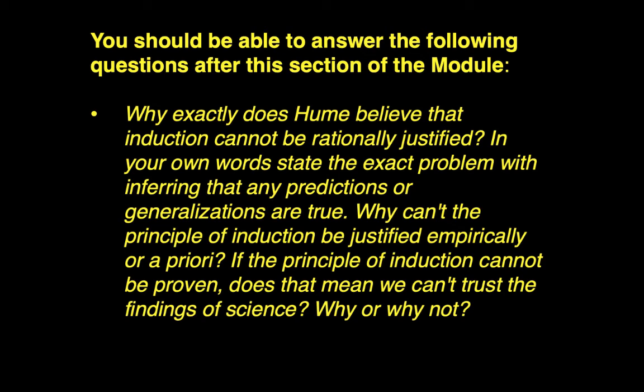You should be able to answer the following questions after this section of the module: Why exactly does David Hume believe that induction cannot be rationally justified? In your own words, state the exact problem with inferring that any predictions or generalizations are true. Why can't the principle of induction be justified empirically, or a priori, independently of experience? And if the principle of induction cannot be proven, does that mean we can't trust the findings of science?